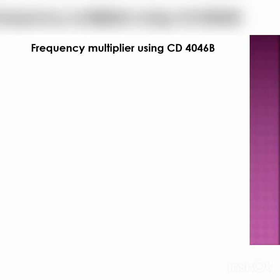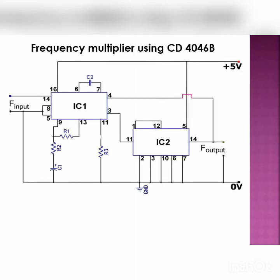Now, we will see the connection diagram of frequency multiplier using IC CD4046B. The two ICs, that is CD4046 and divided by N block IC, both are being operated on plus 5 volts so that they will share a common power supply. Now, IC1 will be the PLL IC CD4046B.